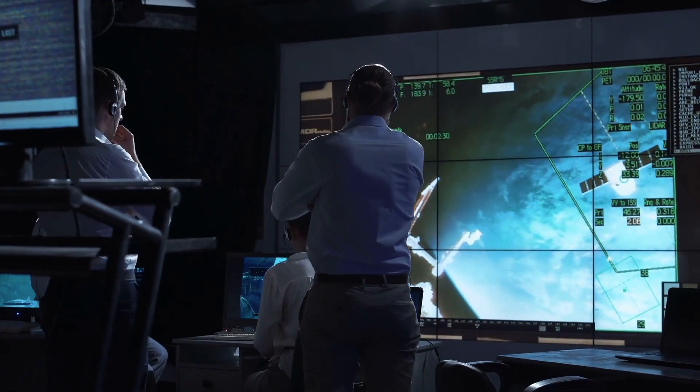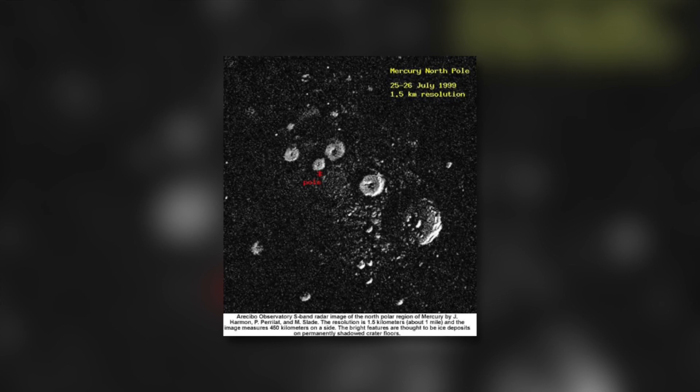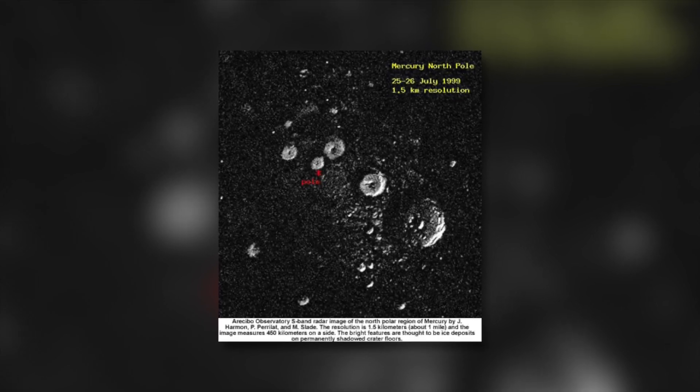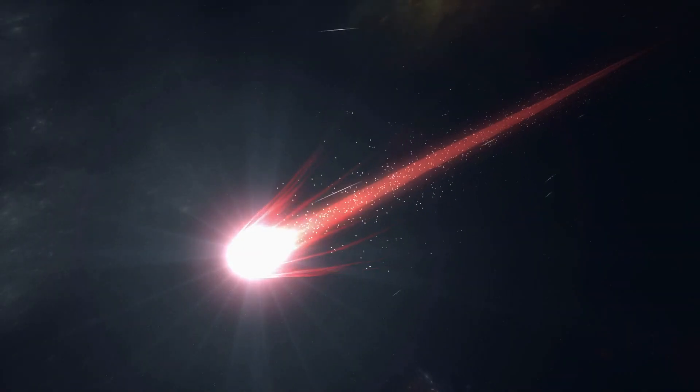Scientists assume that there is ice in the craters of Mercury. The north and south poles of the planet are cold and shady, which could allow them to retain water ice. Meteorites and comets may have brought ice to these areas, or water vapor from inside Mercury may have seeped out and frozen.